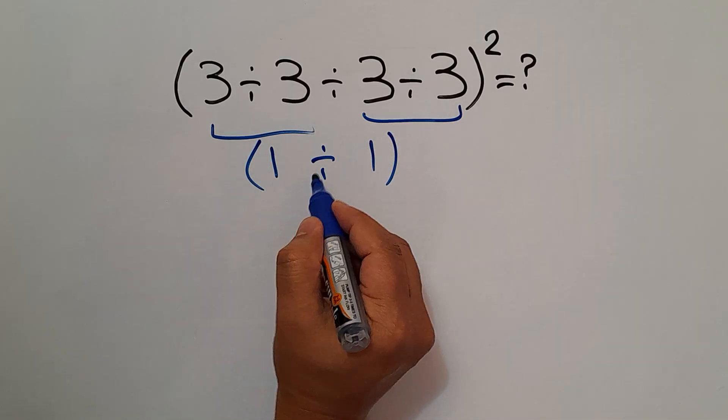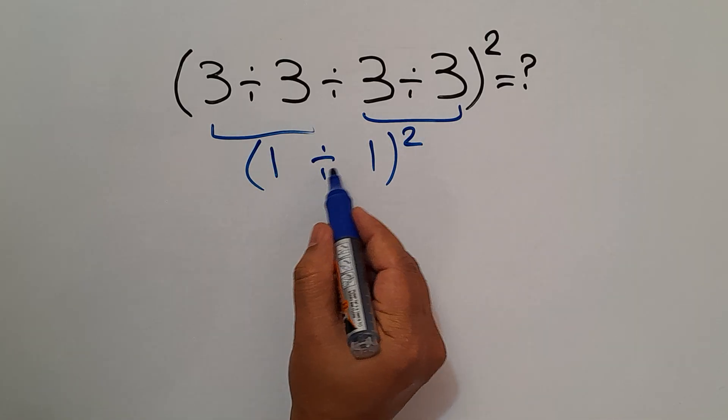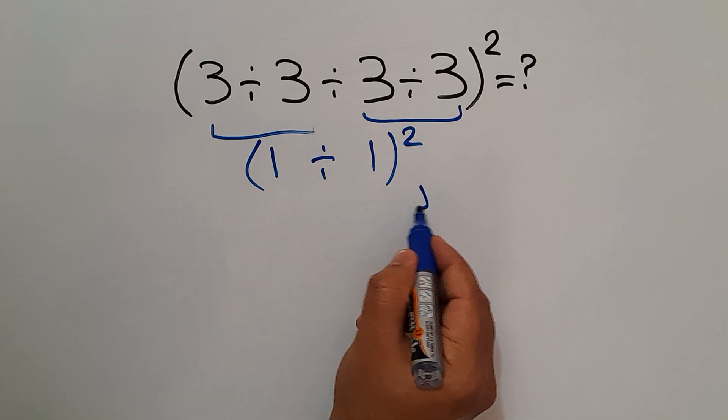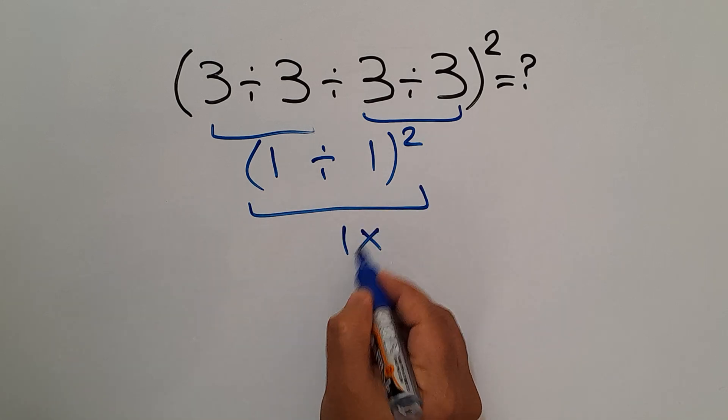And 1 divided by 1 squared. 1 divided by 1 equals 1, and 1 squared gives us just 1. But this answer is not correct.